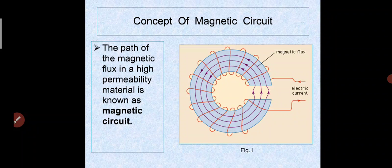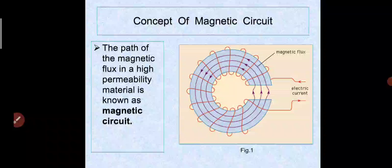The operation of electrical machines like transformers, generators, motors, etc. depends largely on the magnetism produced by the magnetic circuits. Hence their magnetic circuits must be properly designed to obtain the required magnetic conditions for efficient operation. A magnetic circuit consists of a high permeability magnetic material called a core.